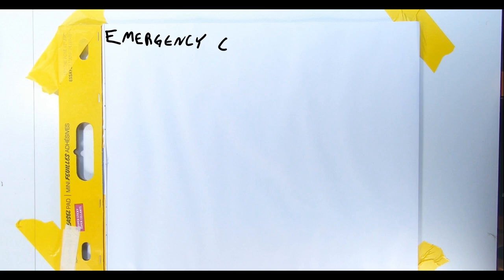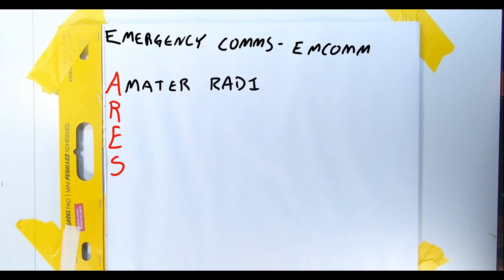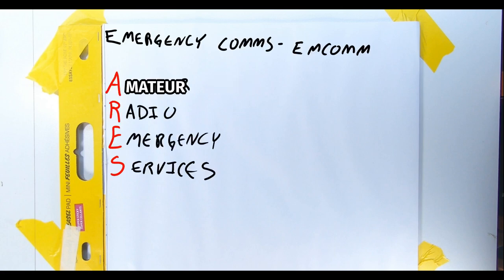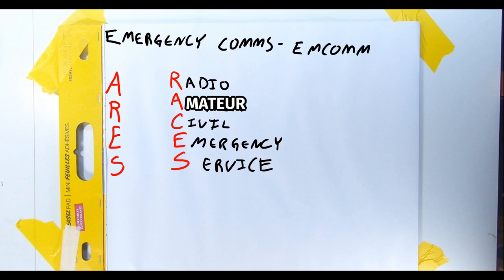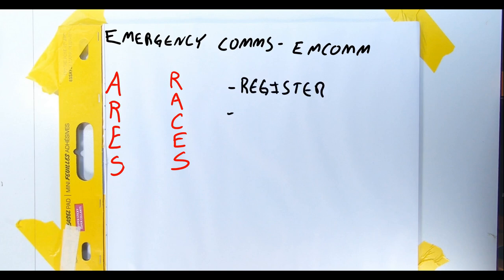Emergency communications is really important in ham radio. There are two organizations that manage it nationwide. One is ARES, the Amateur Radio Emergency Services, and it would be nice if I could spell amateur. The other is RACES, the Radio Amateur Civil Emergency Services. What is my deal? Why can't I spell amateur? Holy cats. To be a part of these organizations, one must register separately with them, with their qualifications and available equipment. While emergency communications is important to ham radio, participation is not a requirement.